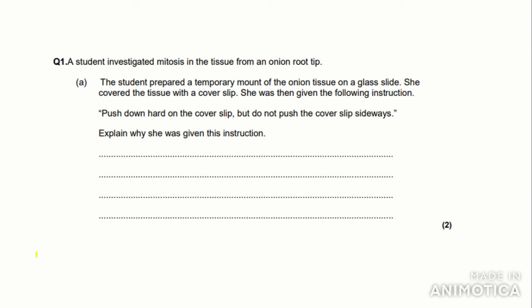So that is it for the content. Now we can get on to some questions. So let's look at the first question. A student investigated mitosis in the tissue from an onion root tip. The student prepared a temporary mount of the onion tissue on a glass slide. Don't get confused by the term temporary mount—this basically just means a microscope slide. She covered the tissue with a cover slip. She was then given the following instruction: push down hard on the cover slip but do not push the cover slip sideways. Explain why she was given this instruction.